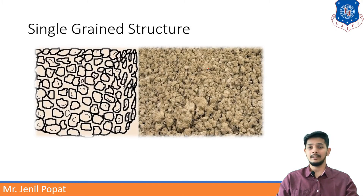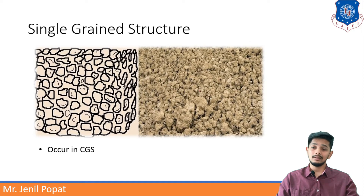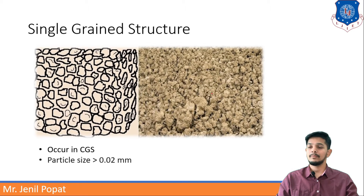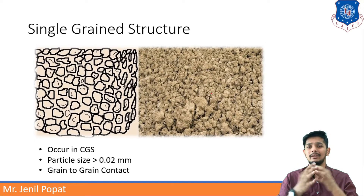First of all, single grain structure. In these images you can see single grains — single grains are together. This practical image is also showing the same. Single grains have come together. This occurs in coarse grained soil (CGS). Particle sizes in this type of soil structure are generally greater than 0.02 mm. And in this type of soil structure, generally grain-to-grain contacts are there.